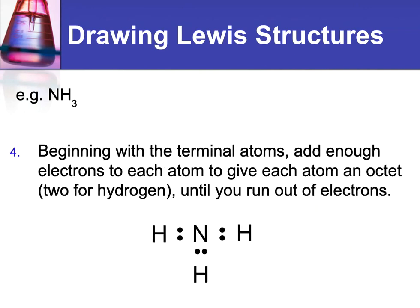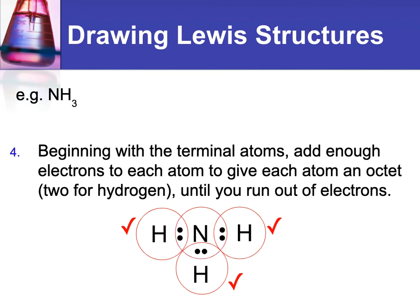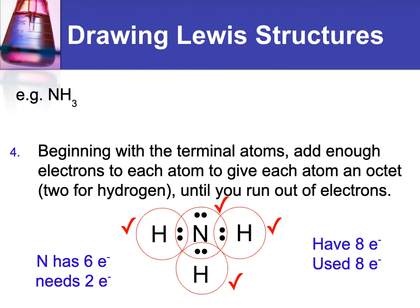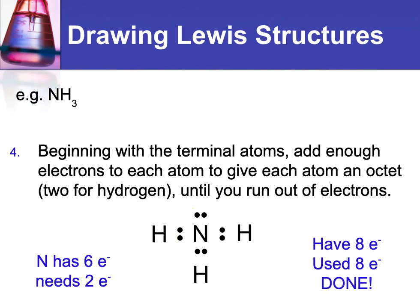The next step is to begin with the terminal atoms — those not in the center — and add electrons to give each atom an octet (or two for hydrogen) until you run out of electrons. Each hydrogen is fine with two electrons. But nitrogen only has six, so it's not stable and needs two more. We have exactly two left, so we give them to nitrogen. Now nitrogen is happy. Final check: we started with eight electrons and used eight electrons. That is the final Lewis structure for ammonia.